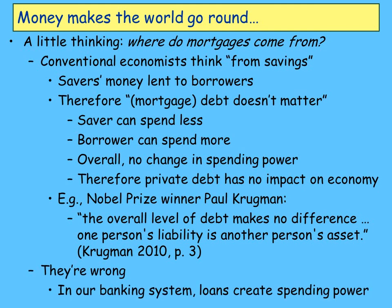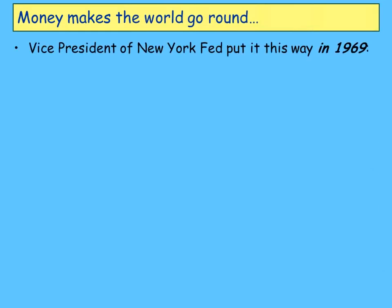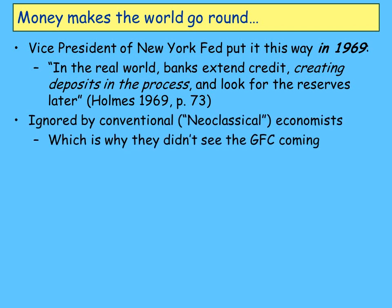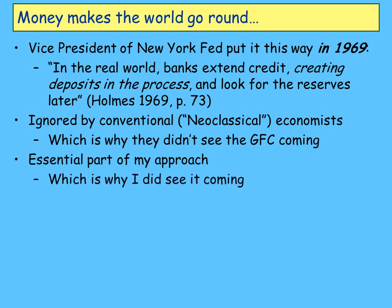Nobel Prize winner Paul Krugman in his most recent paper says the overall level of debt makes no difference — one person's liability is another person's asset. That's how they think about debt, and that's why they ignored the rate of growth of debt in the last 40 years, particularly the last 20. That's why they were blindsided to the crisis coming — it's why I saw it coming. What actually happens in our banking system is that loans create spending power. You don't need to have savings before loans can be created. Banks create it initially — this has been known for 40 years.